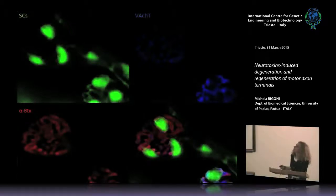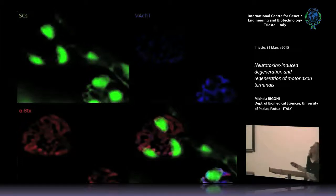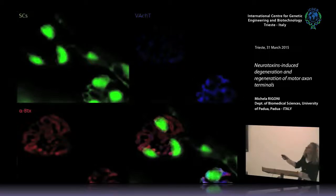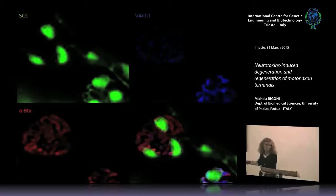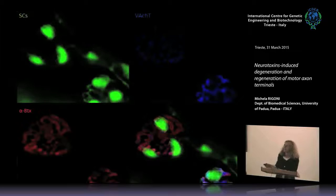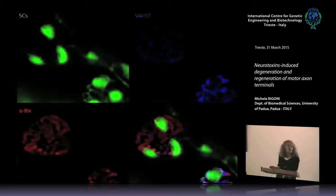This slide shows how the neuromuscular junction appears by immunofluorescence. By using an antibody against the vesicular acetylcholine transporter, you can stain the presynaptic element, and by using a snake neurotoxin, alpha-bungarotoxin, that specifically binds to the nicotinic receptors for acetylcholine, you can stain the postsynaptic membrane. Here in green you can see Schwann cells.